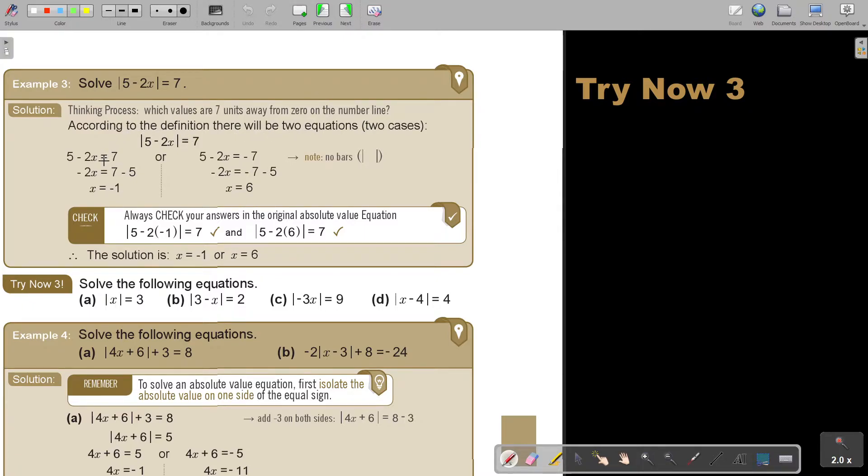Remember, as soon as I write this, I don't write the bars anymore. I can put it in brackets, but not the bars. So X - 7 = 7 or X - 7 = -7. Then I just solve it and I get X = -1 from the first equation and X = 6 from the second.